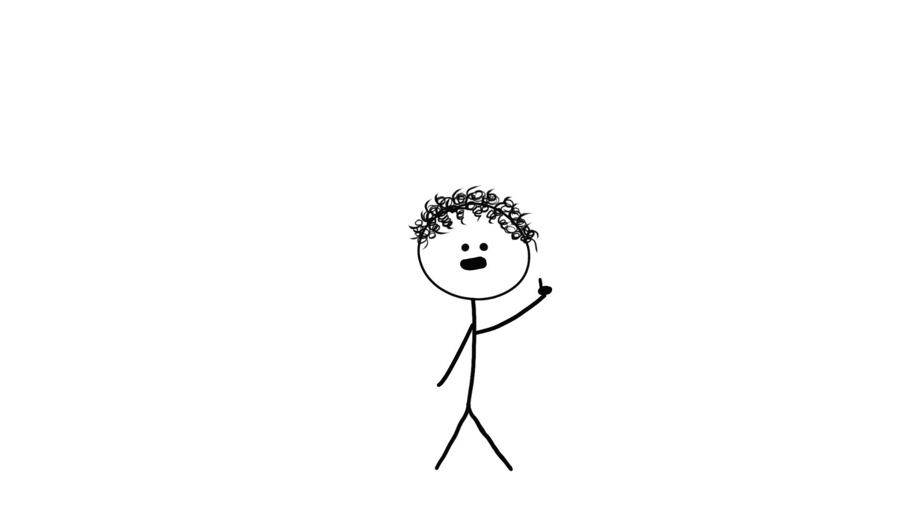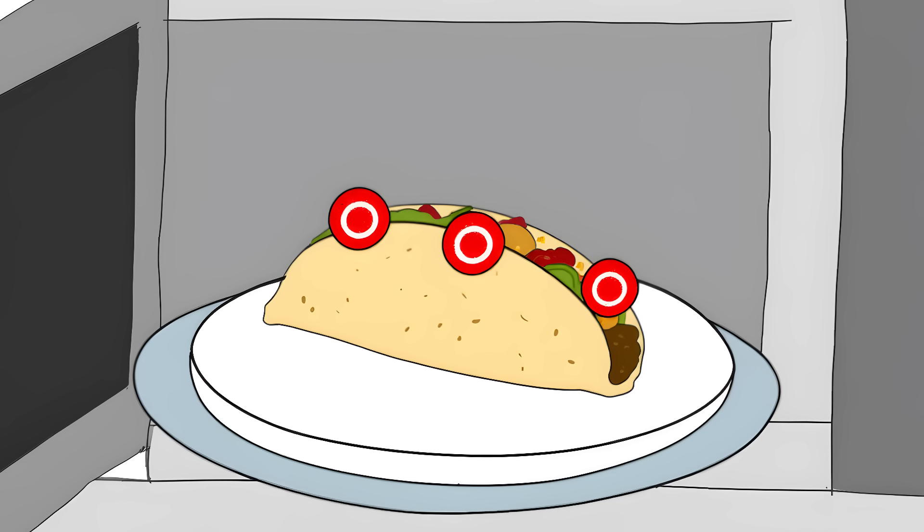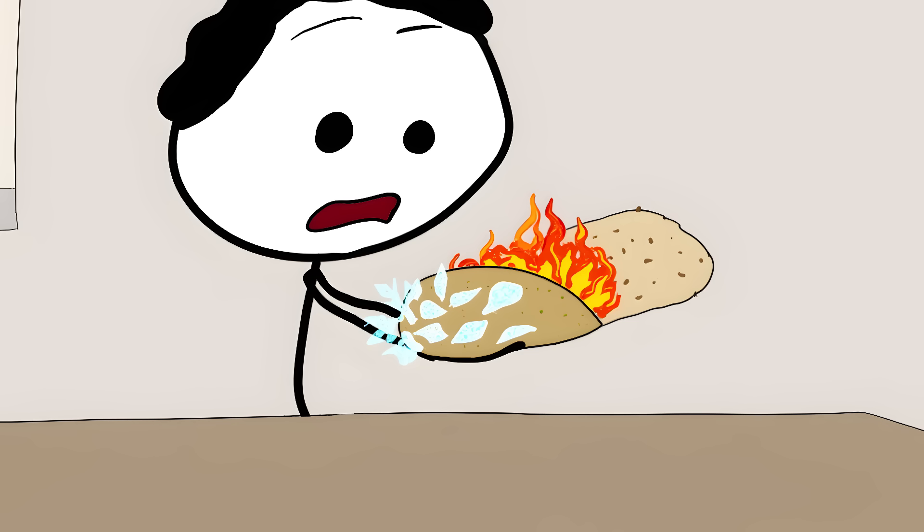But these waves don't spread evenly. They create hot and cold spots, like invisible bullseyes all through your food. That's why your burrito can be nuclear hot on one end and frozen in the middle. 9.